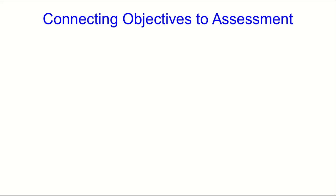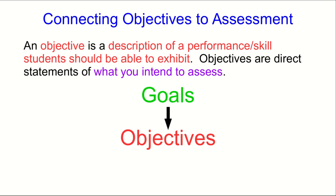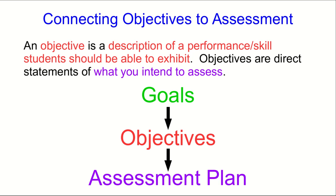What we're trying to do is connect objectives to assessment. Since an objective is a description of something that you are going to get a student to do, they are direct statements of what you intend to assess. So the process of course planning with this method is to start with your goals, break them up into more detailed objectives, and since they are statements of things students will do, they will allow you to make a detailed assessment plan.